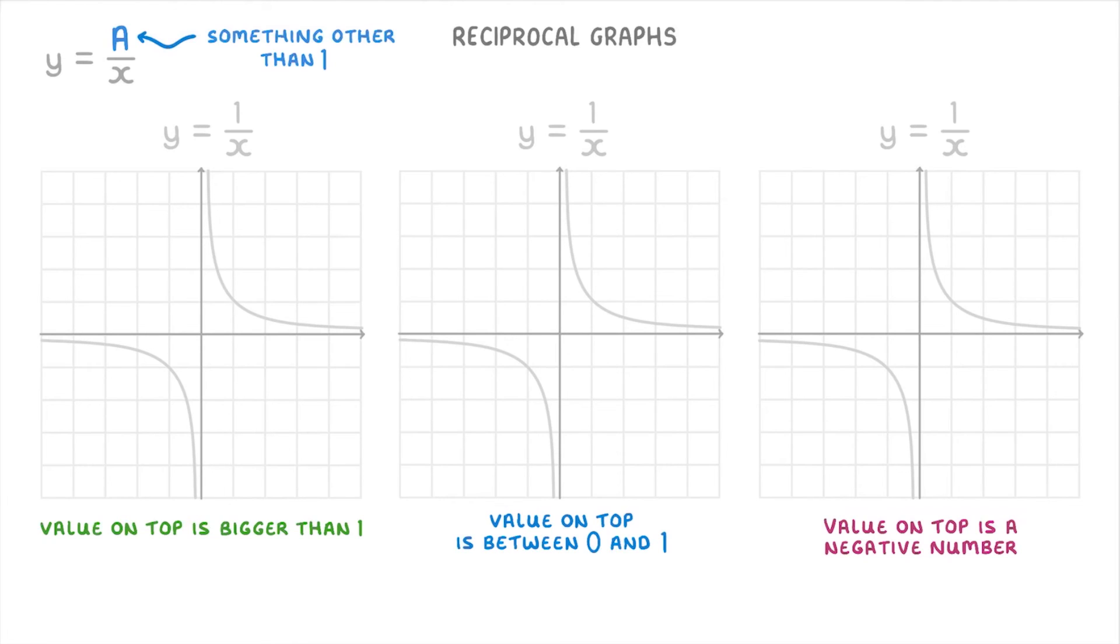When the number on top is bigger than 1, like in y equals 4 over x, the graph basically moves outwards, away from the axes. And the bigger the value on top, the further it will move.